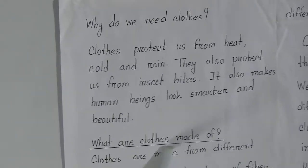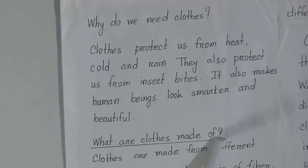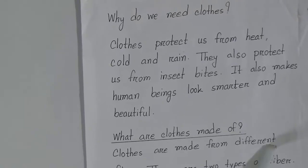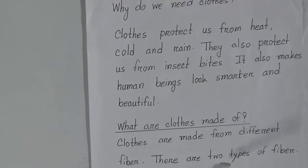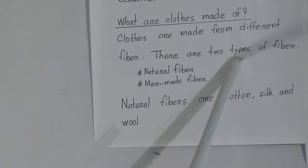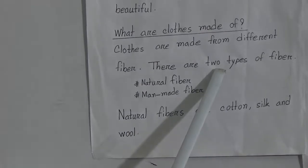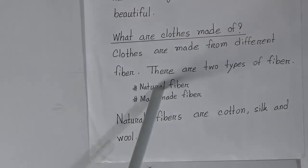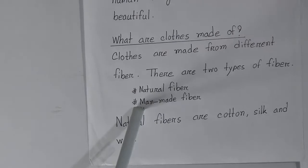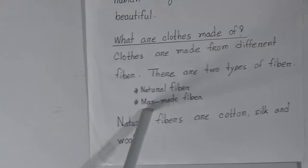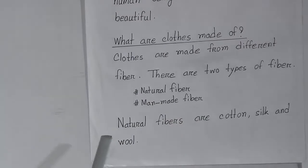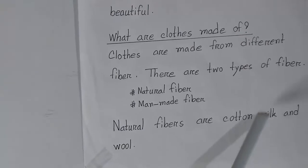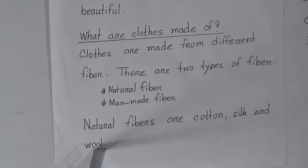Our next question is: What are clothes made of? Clothes are made from different fibers. There are two types of fiber. One is natural fiber and the other is manmade fiber. Natural fibers are cotton, silk, and wool.